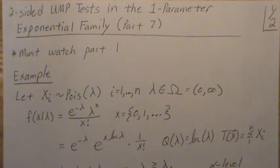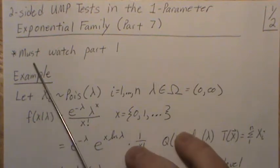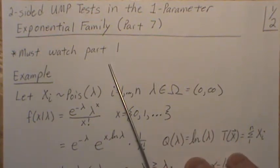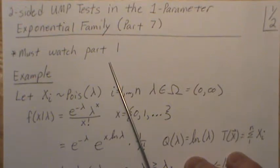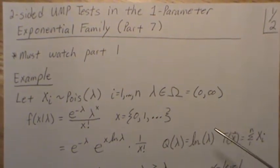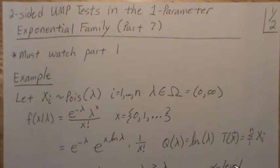Here we're looking at two-sided uniformly most powerful tests in the one parameter exponential family. Now a must-watch is part one where we discuss the theorem on why these two-sided tests are uniformly most powerful.